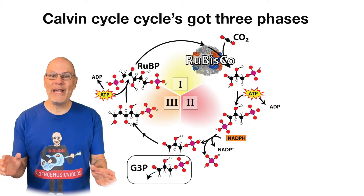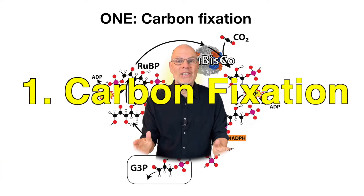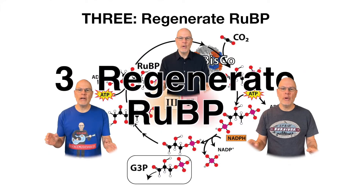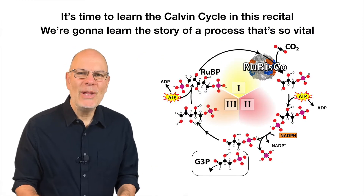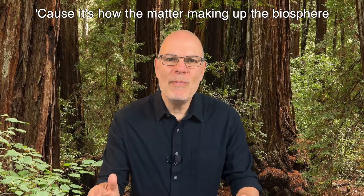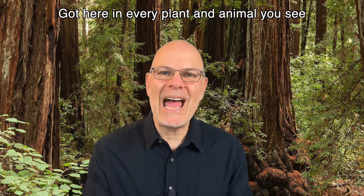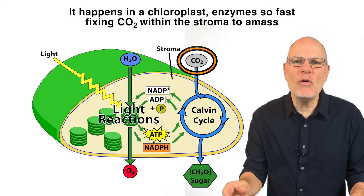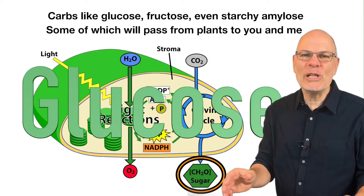Calvin Cycle's got three phases. One, carbon fixation. Two, invest energy, impoverish G3P. Three, regenerate R-U-B-P. It's time to learn the Calvin Cycle. In this recital, we're gonna learn the story of a process that's so vital, cause it's how the matter making up the biosphere got here. It happens in a chloroplast, enzymes so fast, fixing CO2 within the stroma to amass.